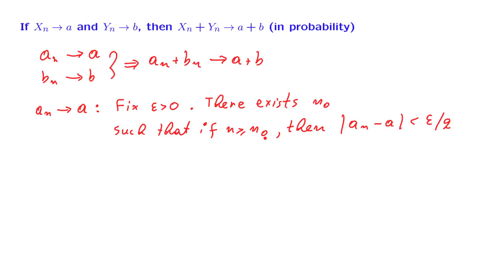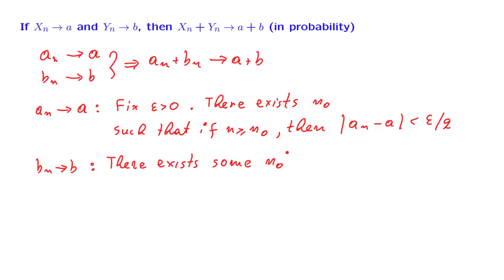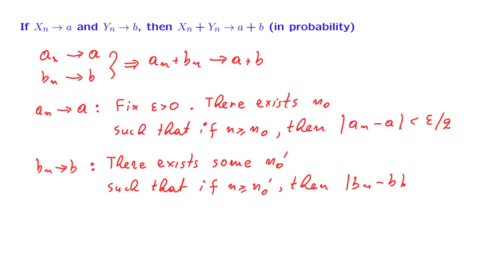Eventually, after some time, we will have the property that |an minus a| is less than epsilon over 2. Similarly, if bn converges to b, then there exists some time — let's call it n0 prime — such that if n is bigger than that time, then |bn minus b| is going to be less than epsilon over 2. So after time n0 and after time n0 prime, these two inequalities will be true.